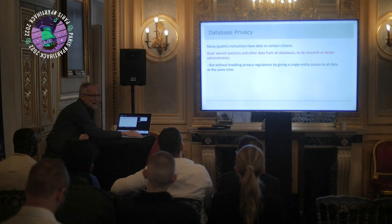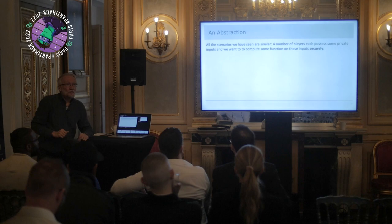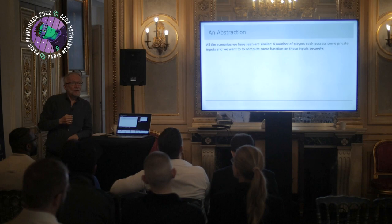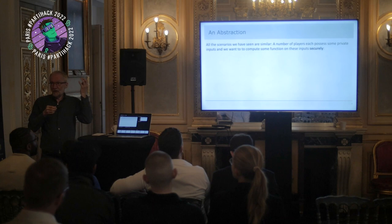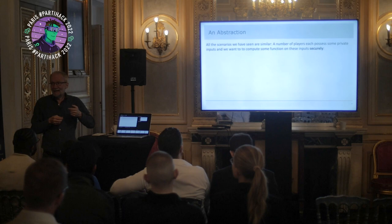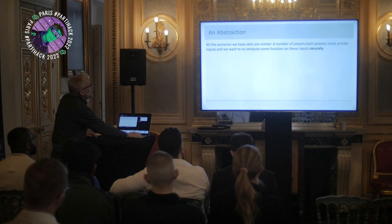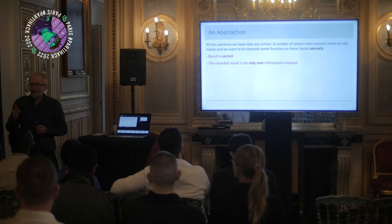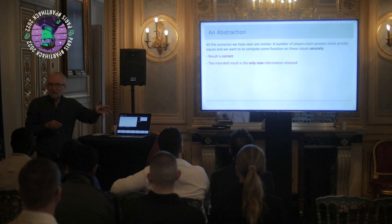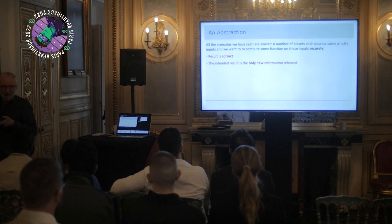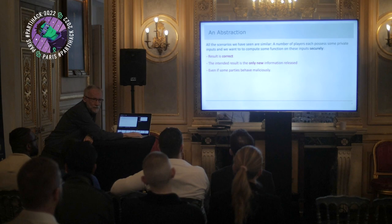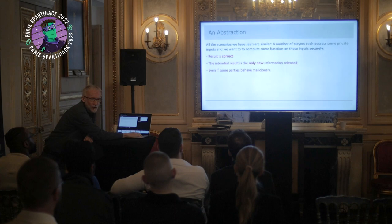I hope you'll agree that all these scenarios are similar. There's a bunch of different actors with private data, and for some reason there is some function we'd like to compute — some computation where, if we put all the private data in, we get a result that in some sense we all want: the result of the auction, the analysis from the benchmarking, et cetera. We want the result to be correct, but we also want the intended result to be the only new information that's released. When we do the benchmarking analysis, this person learns how they can improve — but shouldn't learn the private data of the individual companies that went into the exercise. And we also want this even if some people try to cheat.